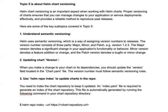Helm chart versioning can be divided into four major topics. The first is understanding semantic versioning. Helm uses semantic versioning — a way of assigning numbers to releases. This is a very common concept if you have been using Git. A version number basically consists of three important parts: major, minor, and patch.